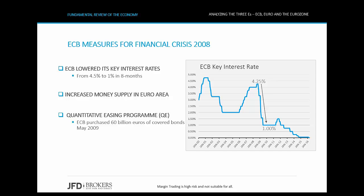Secondly, the Central Bank increased the money supply in the Euro area, and in addition, it launched the Quantitative Easing Program, or as it's widely known, the QE Program. Through this program, the ECB purchased 60 billion euros of covered bonds in May 2009 to provide liquidity to the market that had been in recession at that time, and to stabilize some weaker member states of the Euro area.